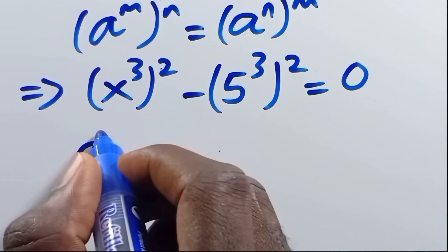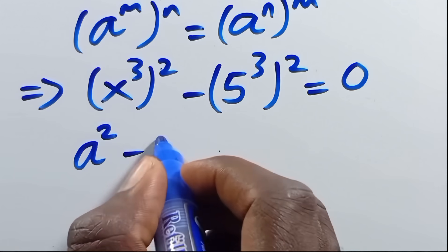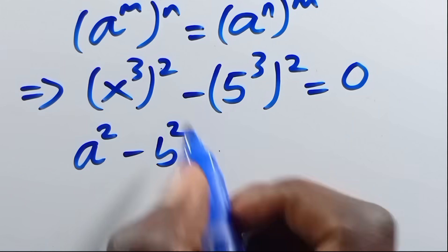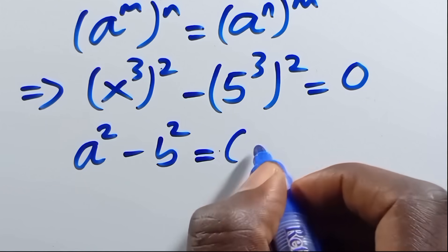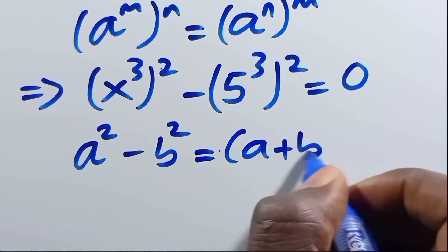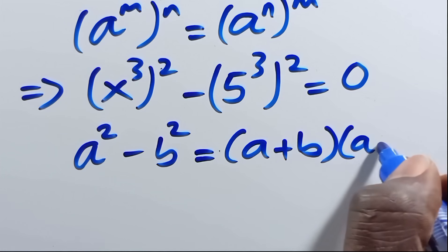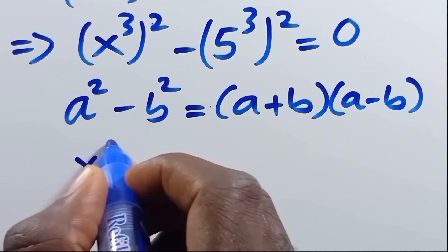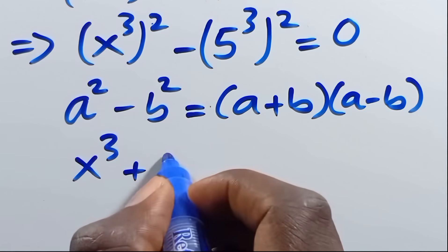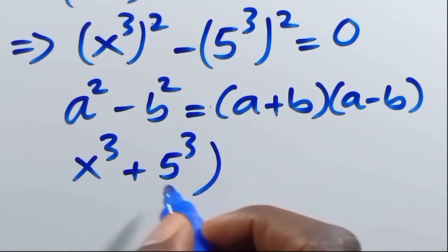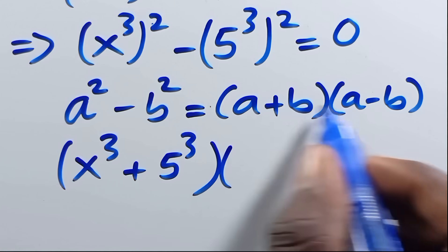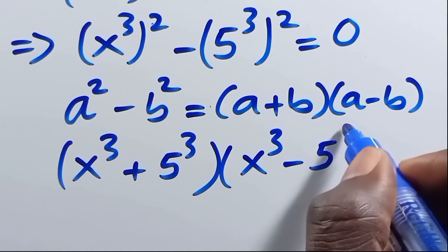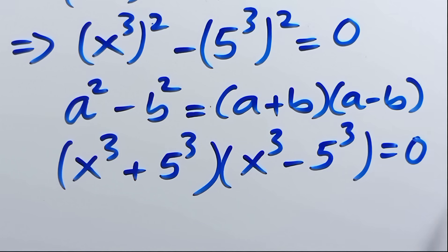We recall that when we have a squared minus b squared, we have the difference of two squares. So we have this as x to the power of 3 plus 5 to the power of 3, times x to the power of 3 minus 5 to the power of 3, equals 0.